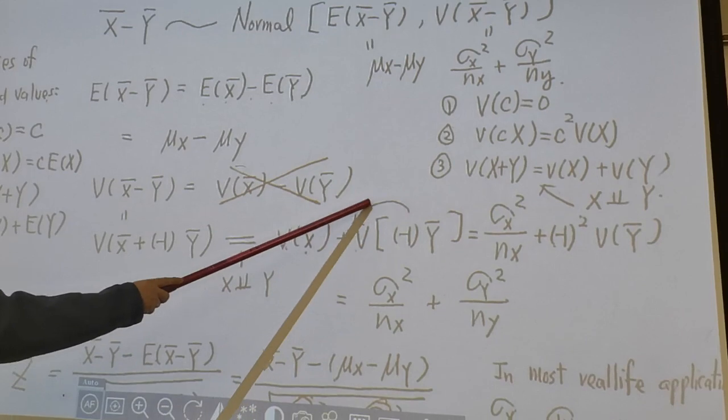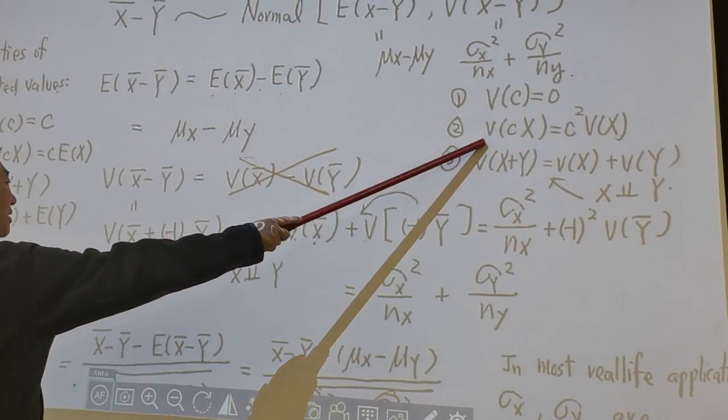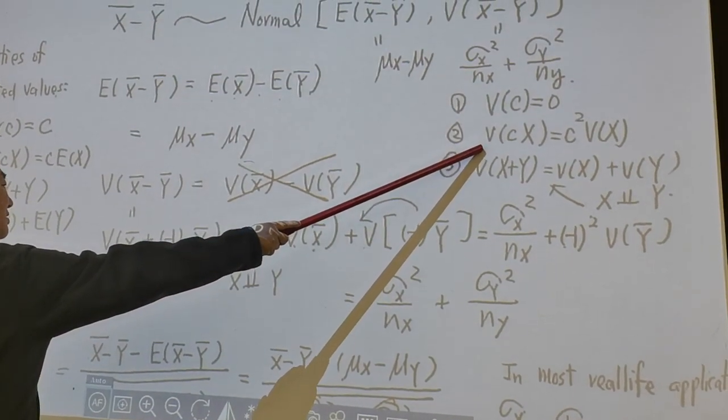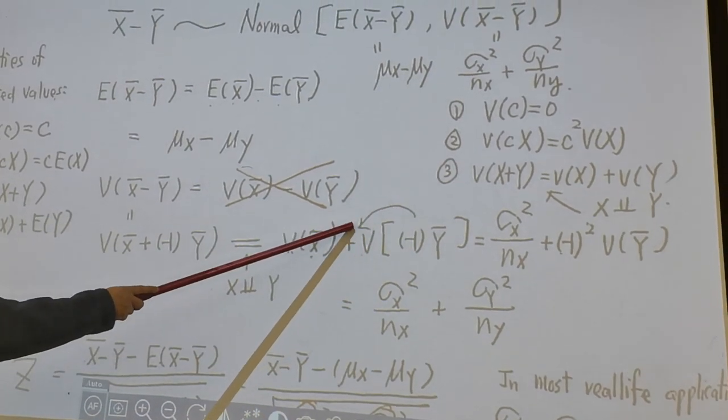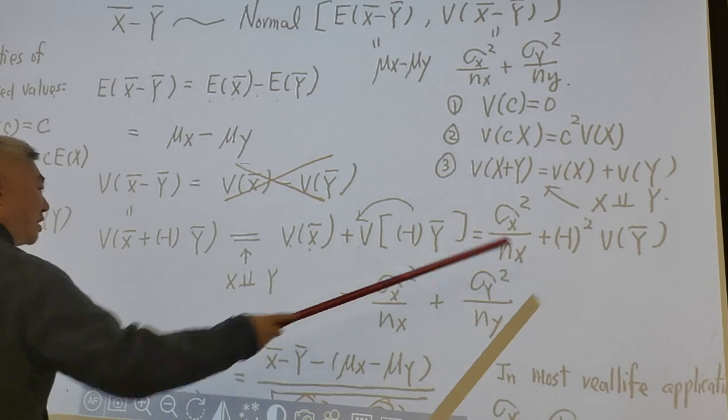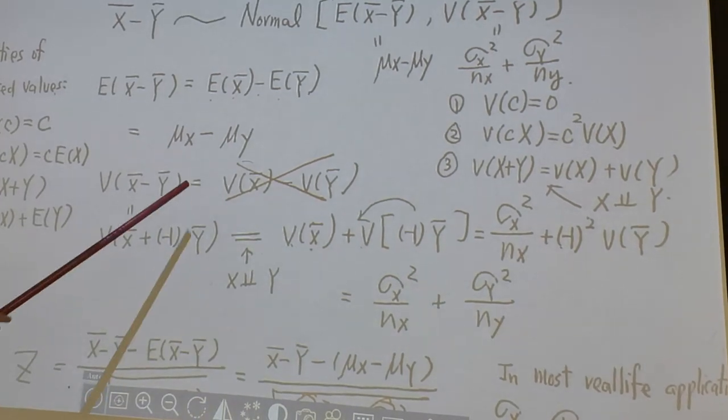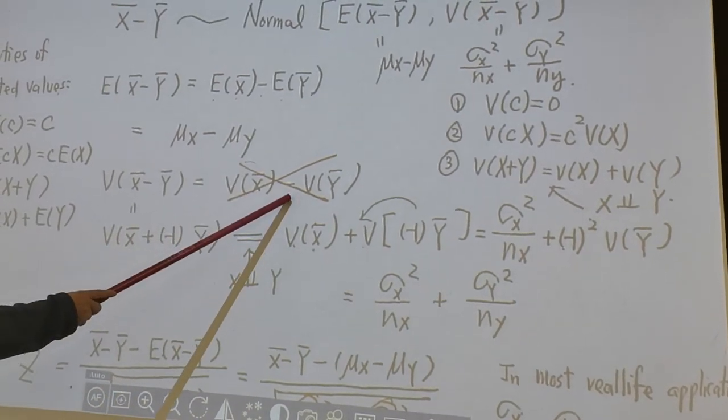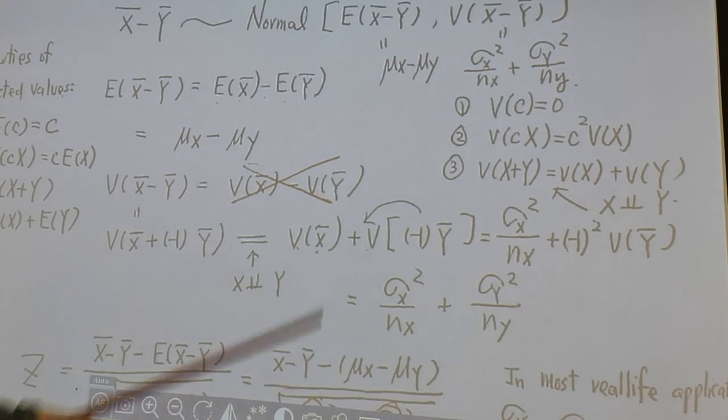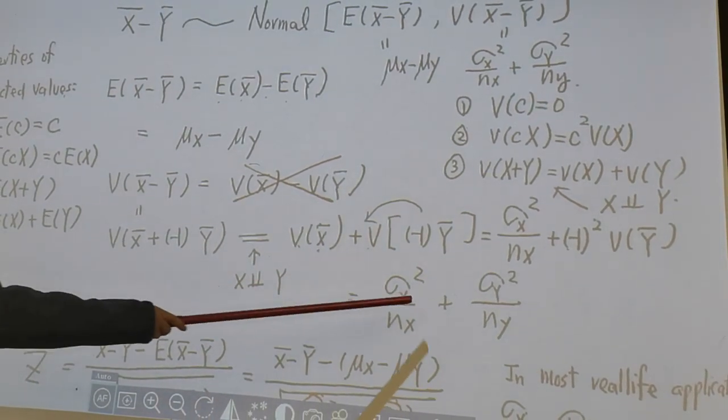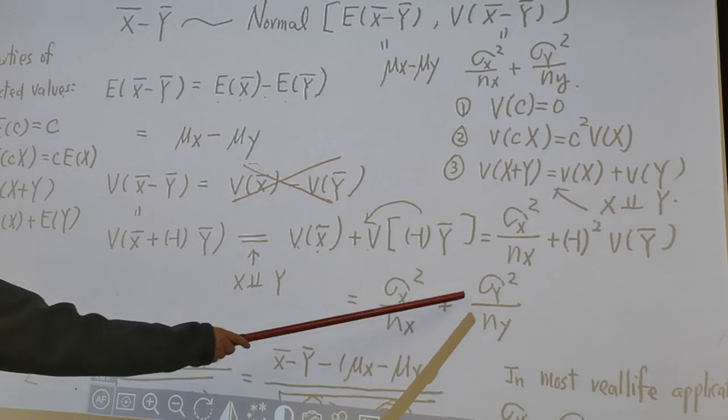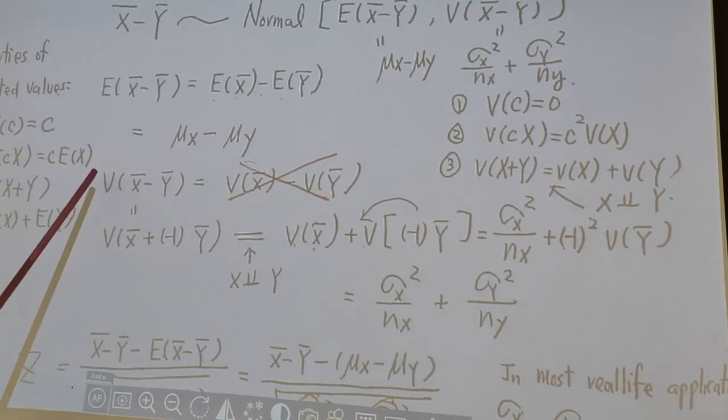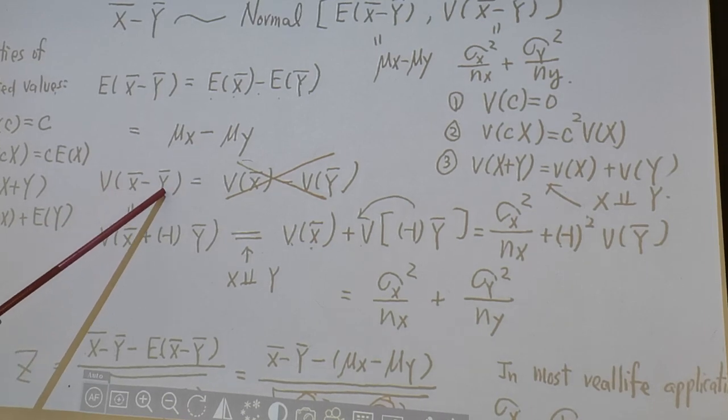But variance x-bar is sigma x squared over nx. And when you pull the minus 1 out, what should you do? Property two. Variance of cx is c squared of variance x. So when you pull the minus 1 out, the minus 1 should be squared. So this one should be variance x-bar plus variance y-bar. So the first term, sigma x squared over nx, the second term, sigma y squared over ny. This is variance x-bar minus y-bar.